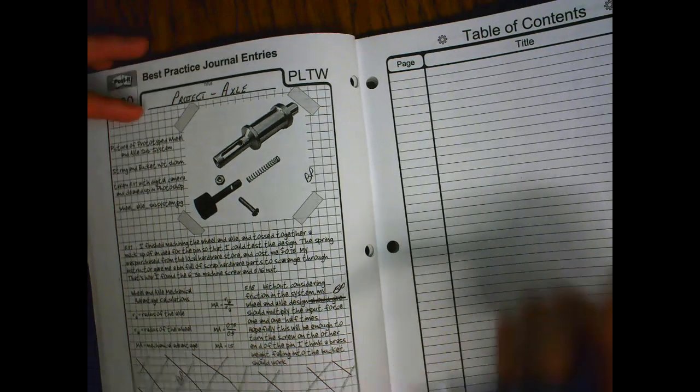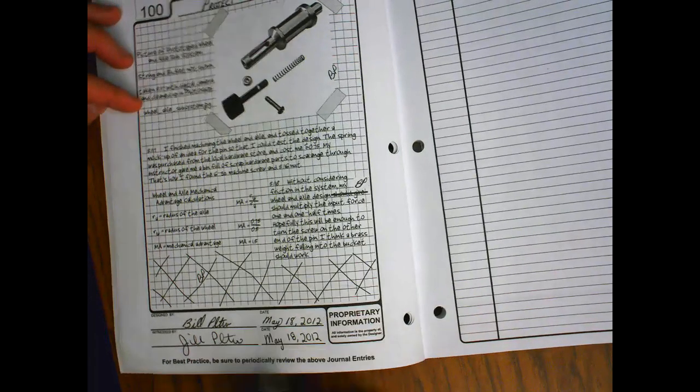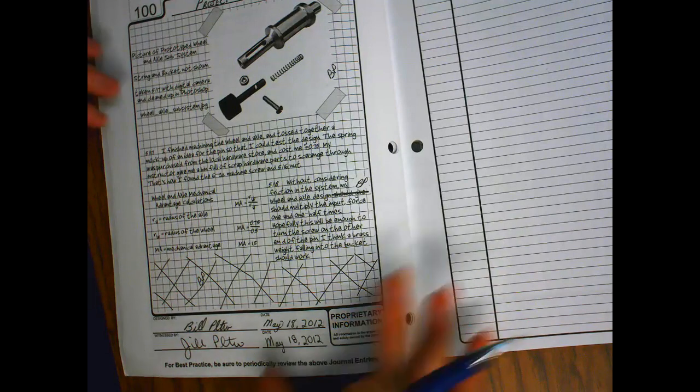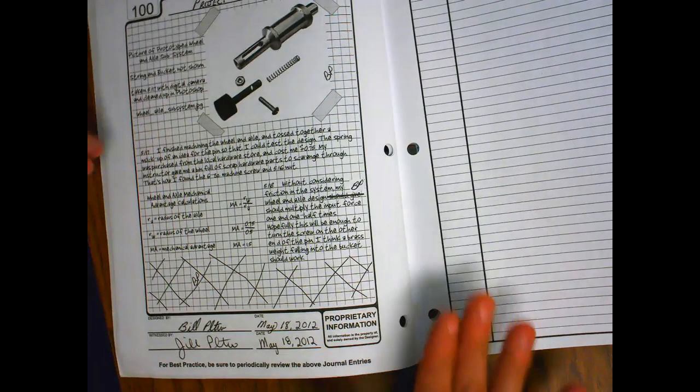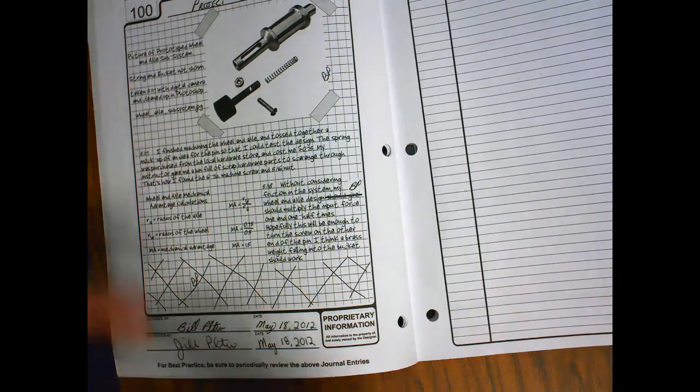You can also see that if any changes were made, like this was taped into the sheet, the person who signed it, who designed it, also did initials here. Here's a change they made to make it make more sense. So when they make a change, they sign it. They're saying, hey, this is mine, this is what I did, this is my work, and it was done on this date.